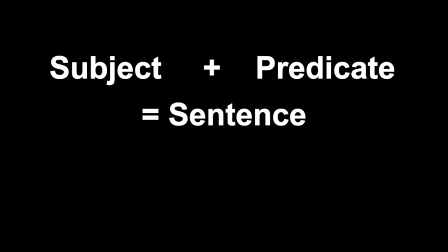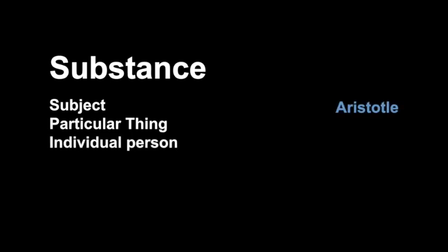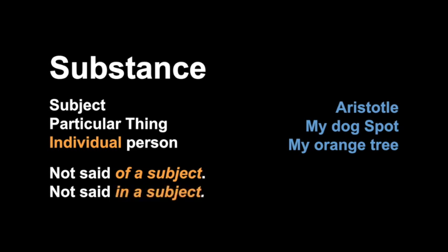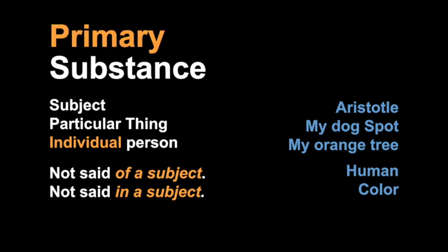But what is a substance? A substance is a subject. Think about subject and predicate forming a sentence. A substance is a subject, a particular thing, an individual person—for example, Aristotle, or my dog Spot, or my orange tree. These are particular, individual things. Aristotle said that a substance is not said of a subject and not said in a subject. It is neither said of nor in a subject. Human is said of Aristotle, so human is not itself a substance. Color is said to be in the dog or in the orange tree, so color is not a substance. We're talking here about a primary substance.